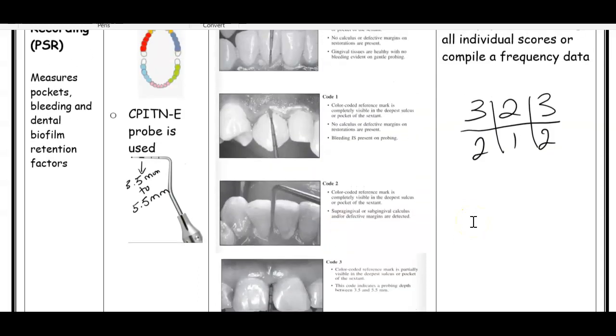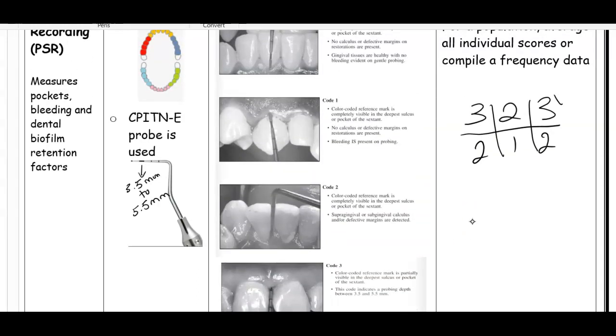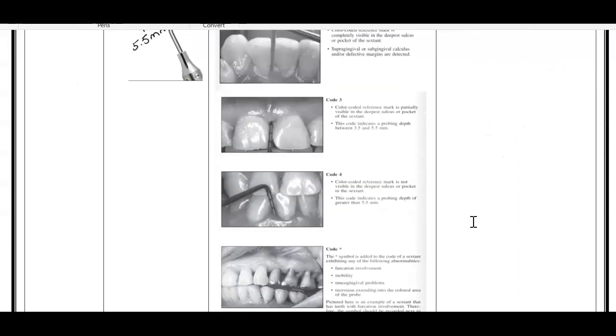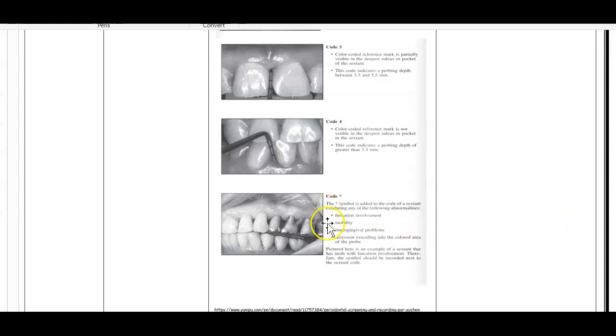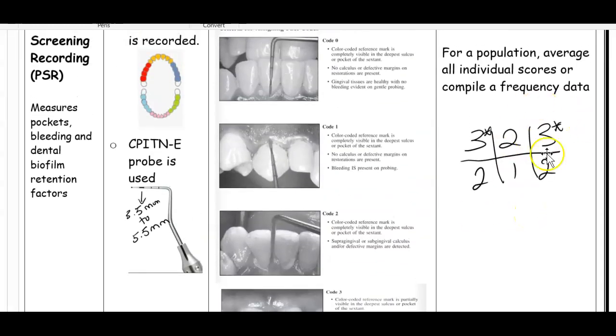Sometimes we'll put an asterisk. For example, if I get a code three, I might put an asterisk right beside the number. The asterisk is used because perhaps there was a furcation, or there was mobility, lots of mobile teeth, or maybe recession. The gums had lots of problems such as severe recession. If there is lots of recession, you would put an asterisk.